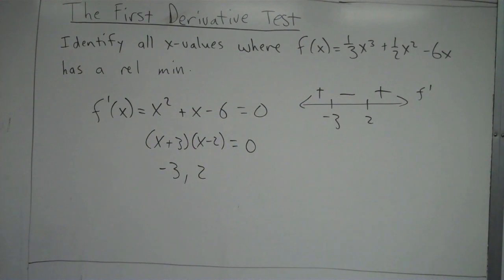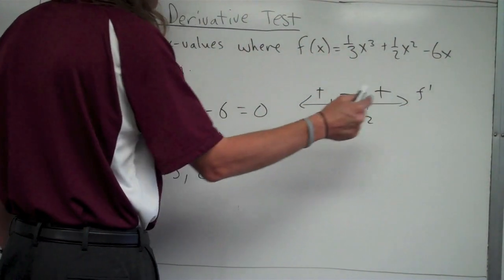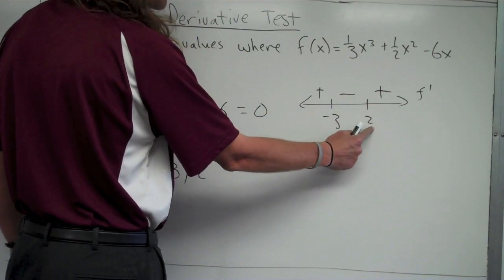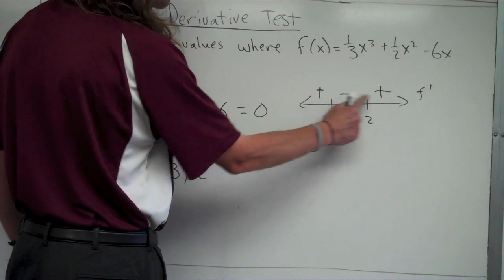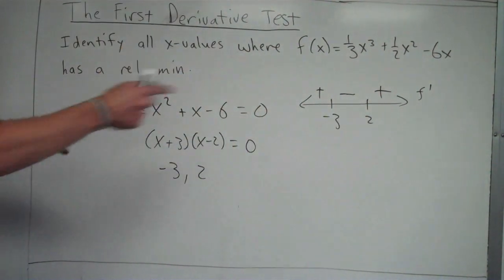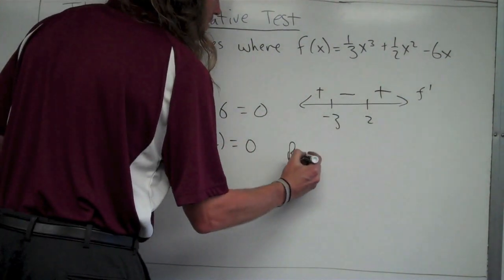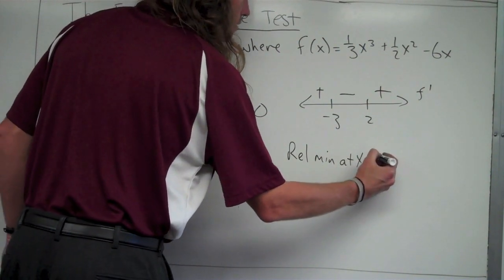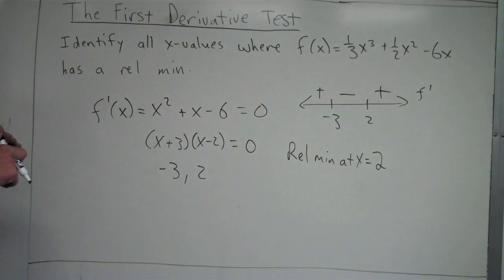So, what we're looking for now, again, we want to find where, identify the x values where that function has a relative min. As I said a second ago, a relative min occurs when f prime changes from negative to positive. Let's look on our f prime sign chart here. I see a negative right here. I see a positive here. There's a change at two. So, to the left-hand side of two, f prime is negative. To the right-hand side of two, f prime is positive. So, at two, there's a change from negative to positive. So, that means there's a relative minimum at x equals two. Relative minimum at x equals two.